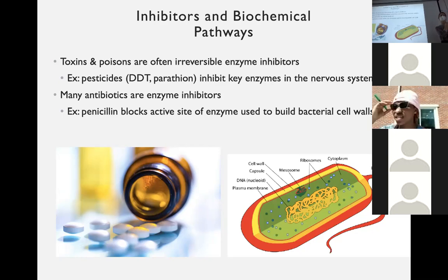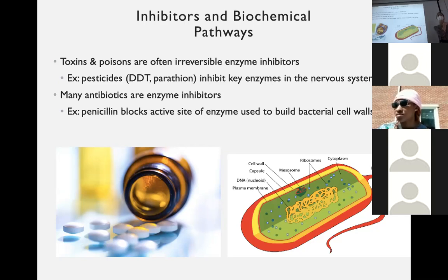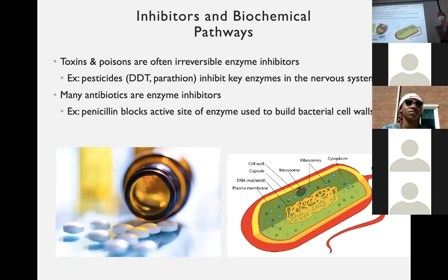Parathion is a really common pesticide these days, as well as DEET. We have DEET now, which is not harmful, usually, to humans. So pesticides are a good example of where we use inhibitors in everyday life.